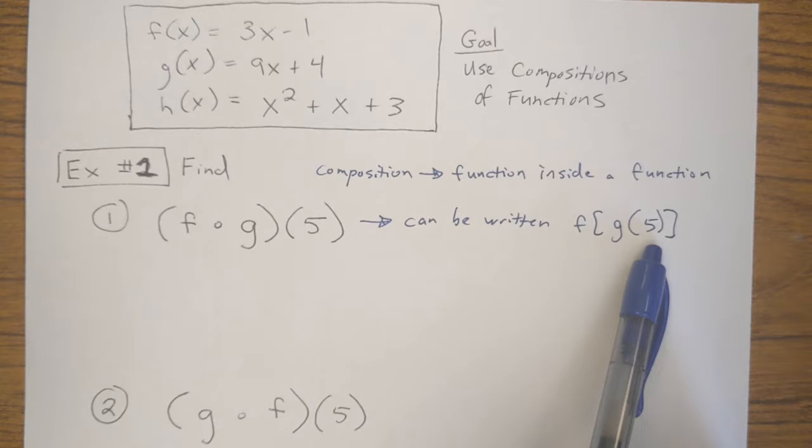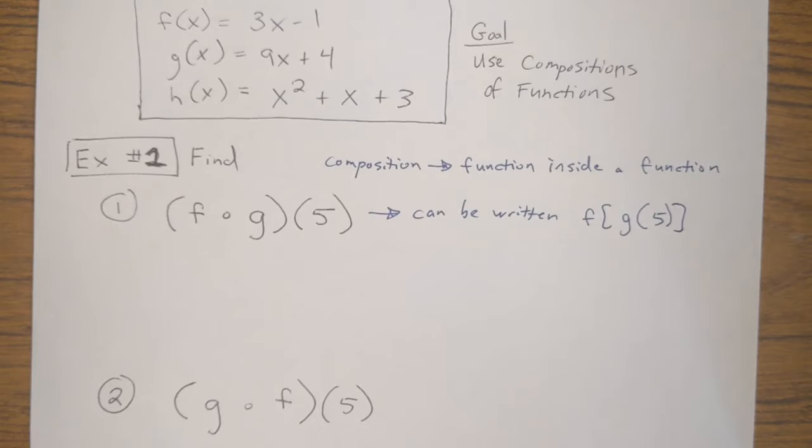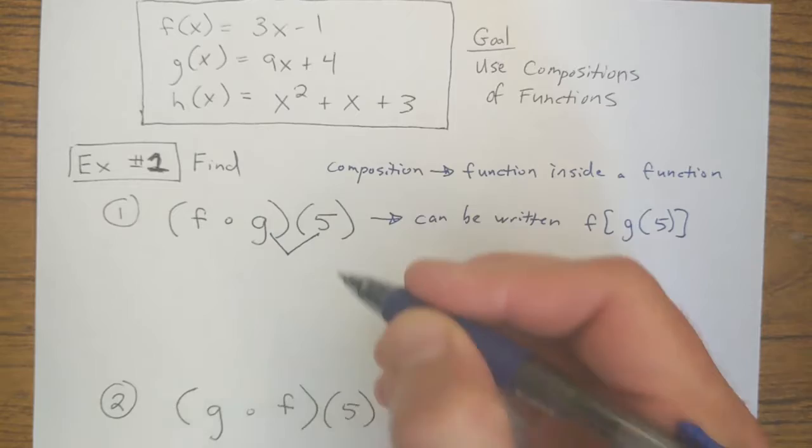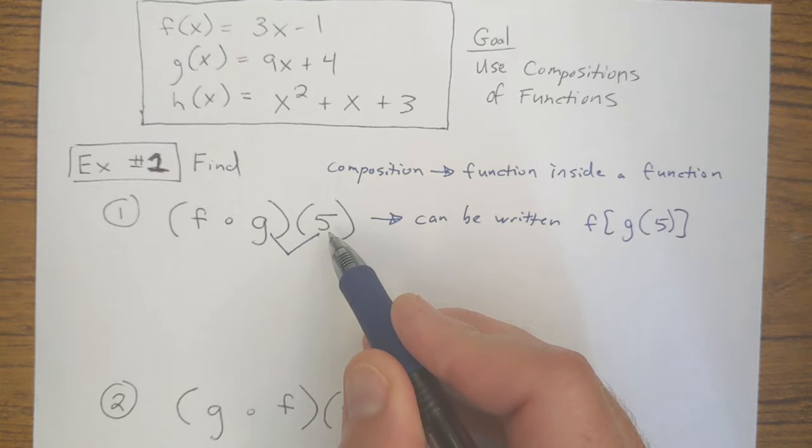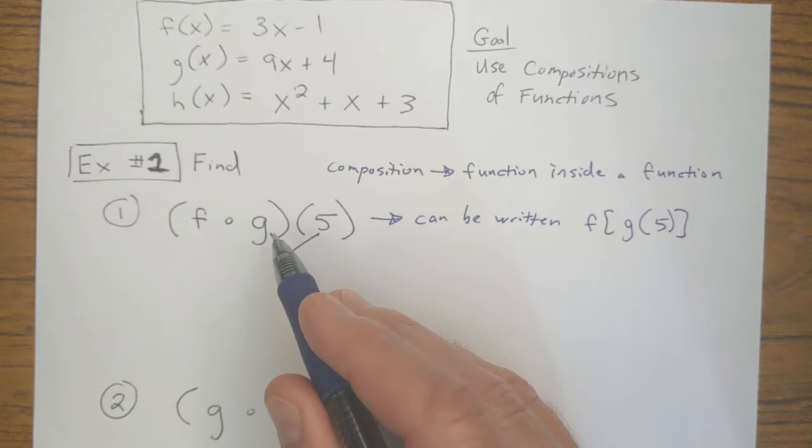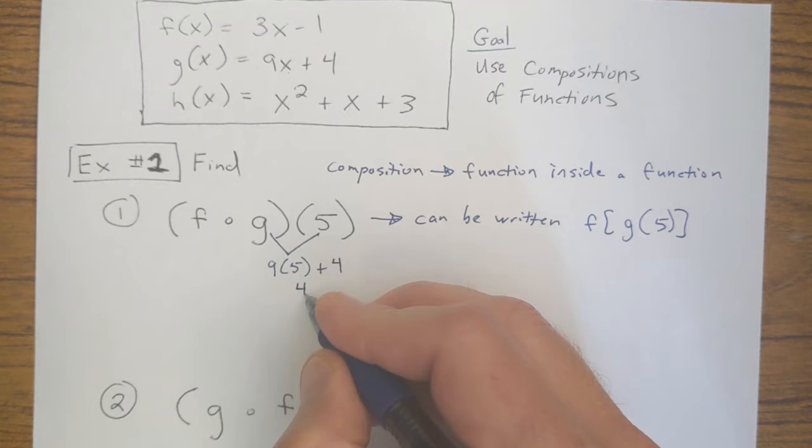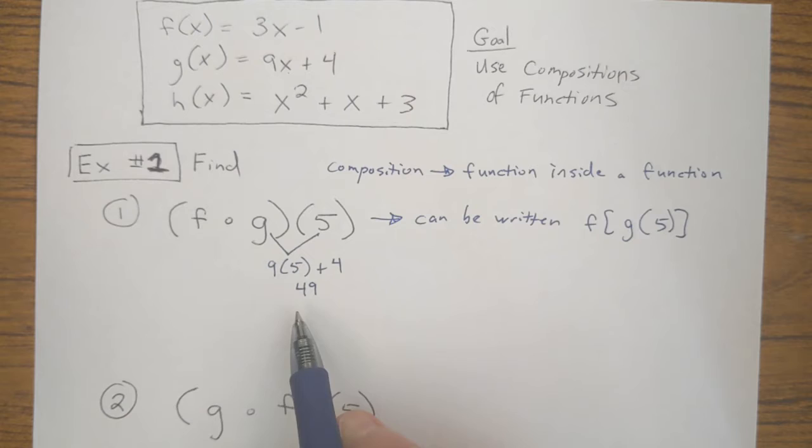In essence, we're taking this G of 5, finding out what G of 5 is, and then whatever answer we get, we're going to input that answer into F. So there's a lot of different ways to write this. Different teachers will do it differently. The way I like to do it, I like to use these little kind of like carrots below the problem. When I draw this little carrot, what that's going to mean is that we're going to input the 5 into G. In this case, you always want to work kind of from the inside to the outside, or we're in essence here working from the right to the left. So start by plugging the 5 into G. Take away this X, replace it with a 5. That would be 9 times 5 plus 4. All right, that comes out to 49.